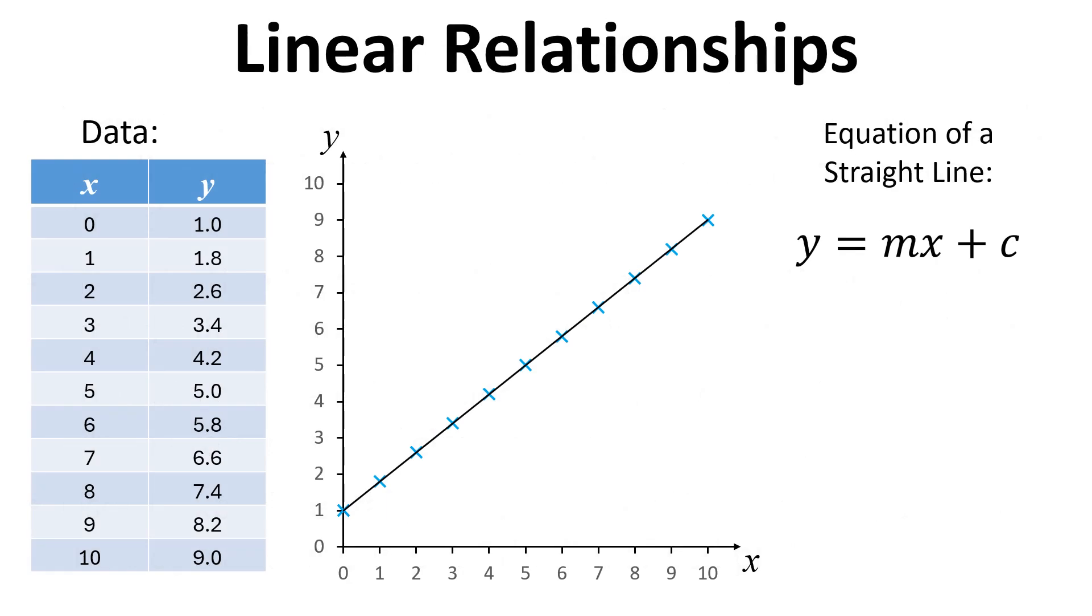Here's an example of some linear data, and it's plotted on a graph. The equation for the line is y equals mx plus c. In this case, we have a gradient of 0.8 and an intercept of 1. So the overall equation is y equals 0.8x plus 1. That's already in a linear form.